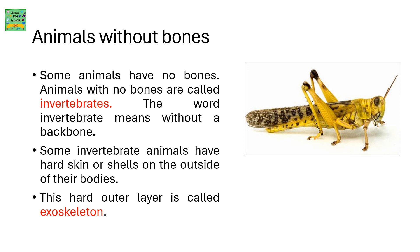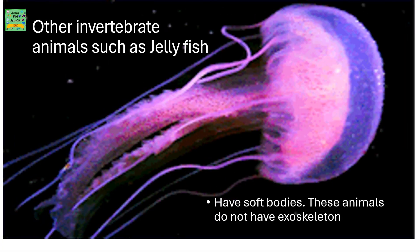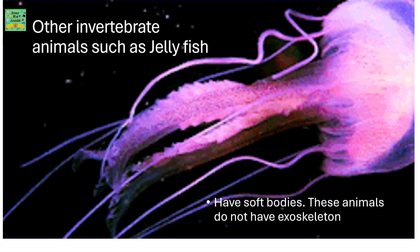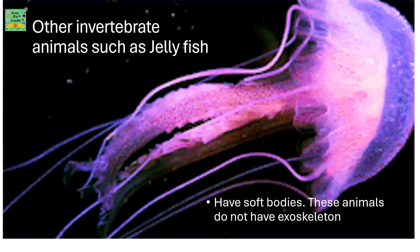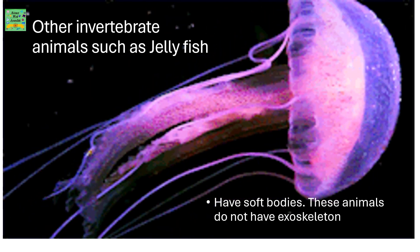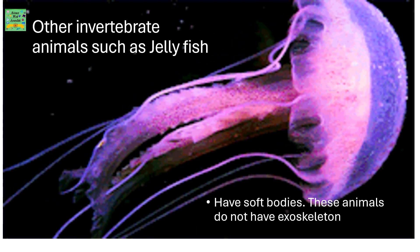Animals without bones: some animals have no bones, and these are called invertebrates. The word invertebrate means without a backbone. Some invertebrate animals have hard skin or shells on the outside of their bodies — this hard outer layer is called an exoskeleton. Other invertebrate animals, such as jellyfish, have soft bodies and do not have an exoskeleton.